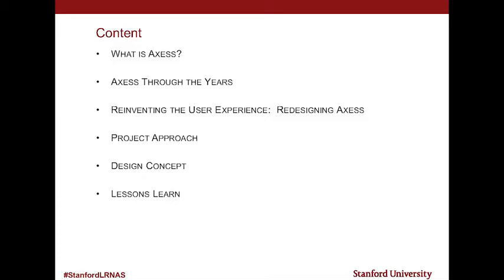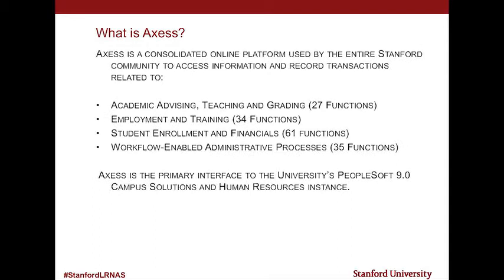So, Access — and it's spelled incorrectly on purpose. It stands for the axe, if you're familiar with Stanford and the Cal rivalry. There's an axe that's in play. So we're named Access, and Access is our consolidated student, HR, and learning portal for the entire university.